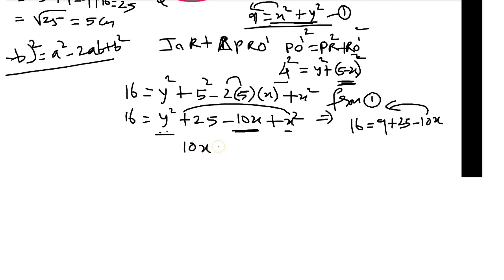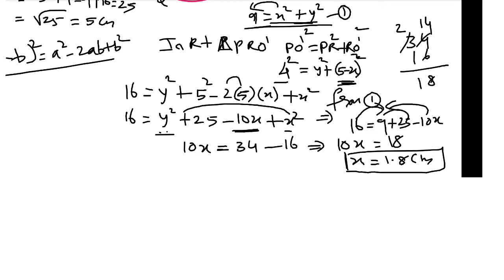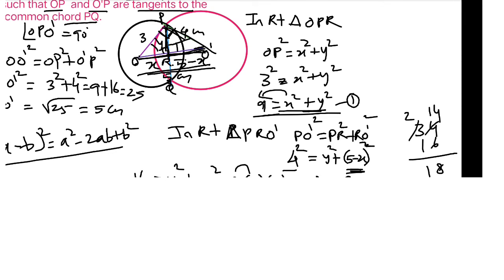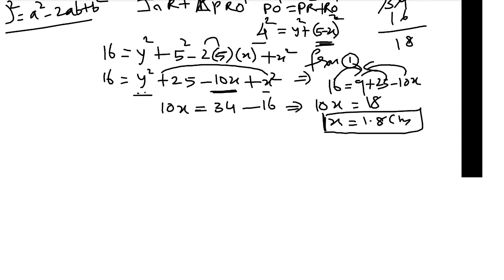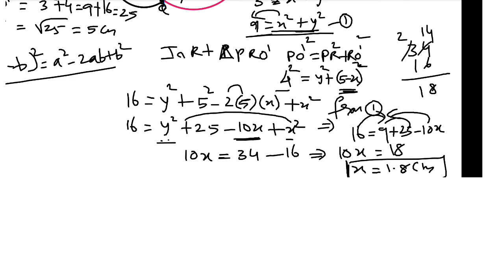From equation 1, x square plus y square equals 9. So 16 equals 9 plus 25 minus 10x. Then 10x equals 34 minus 16, that is 18. So 10x equals 18, x equals 1.8 cm.